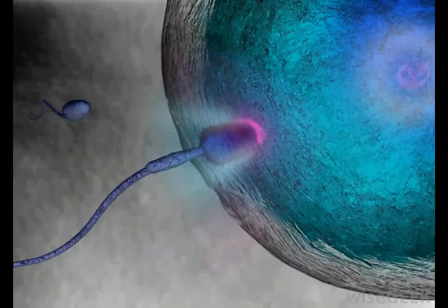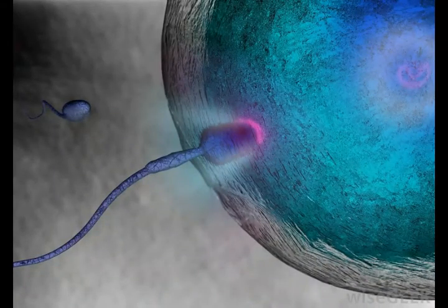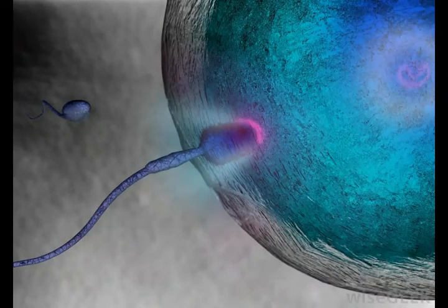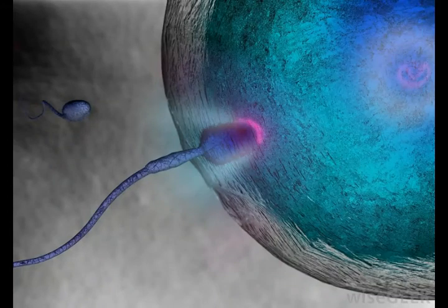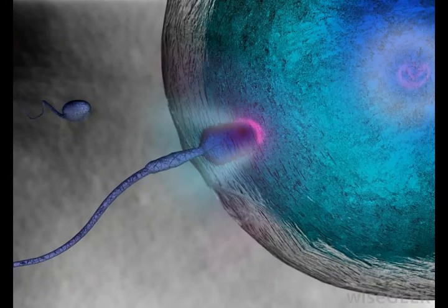Meiosis, on the other hand, reduces the number of chromosomes by half, so that, for example, human egg and sperm cells, called gametes, each have 23 chromosomes and can join to produce a zygote with 46. It has two division phases, whereas mitosis has only one.